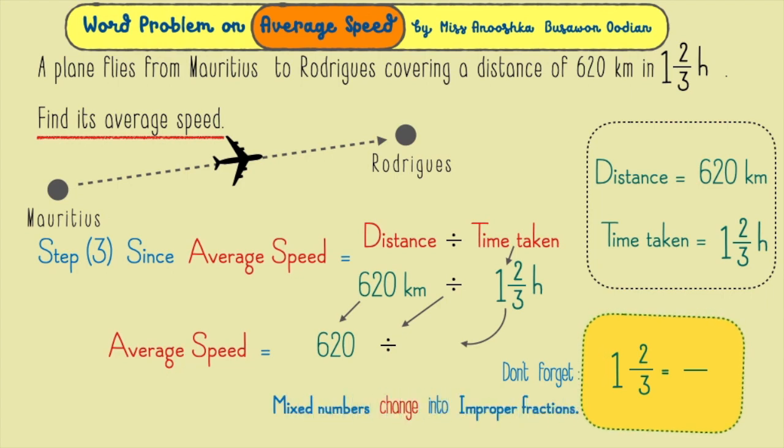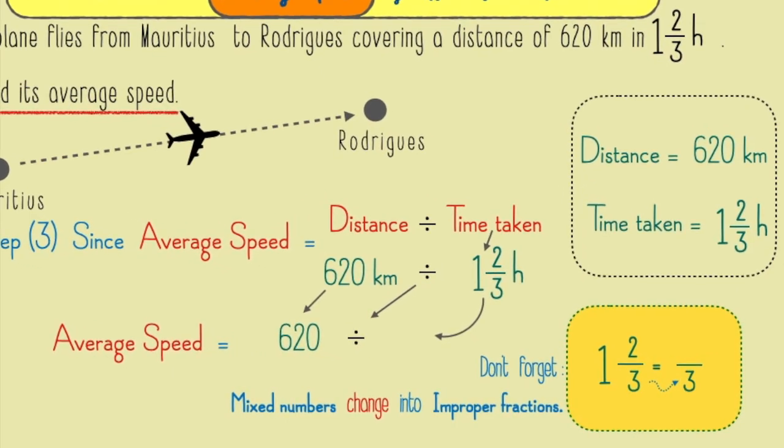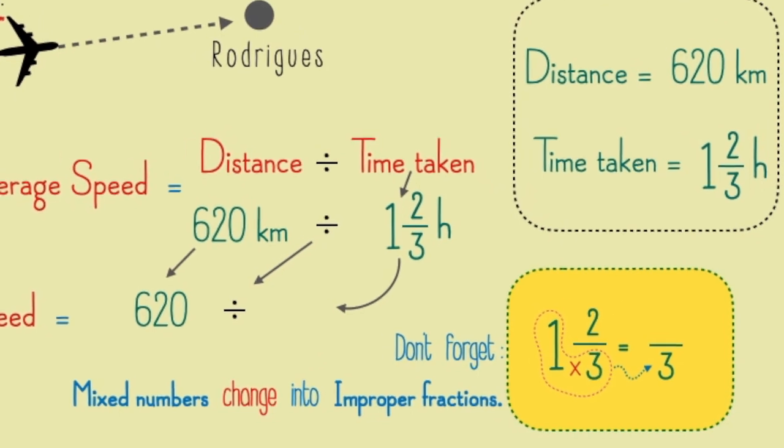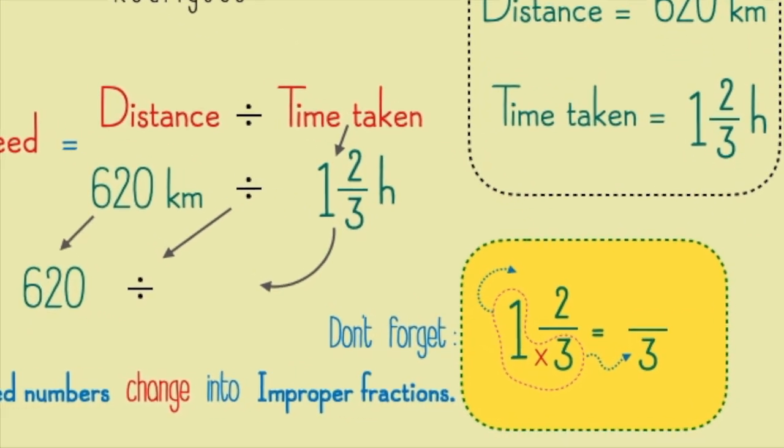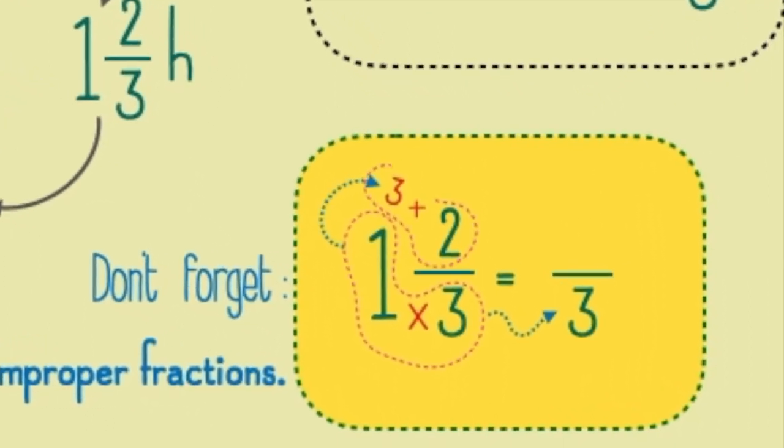Let me show you how to do it. The denominator 3 remains the same. We then multiply the denominator 3 by the whole number 1. We get 3, which we then add to 2, in order to get numerator 5.